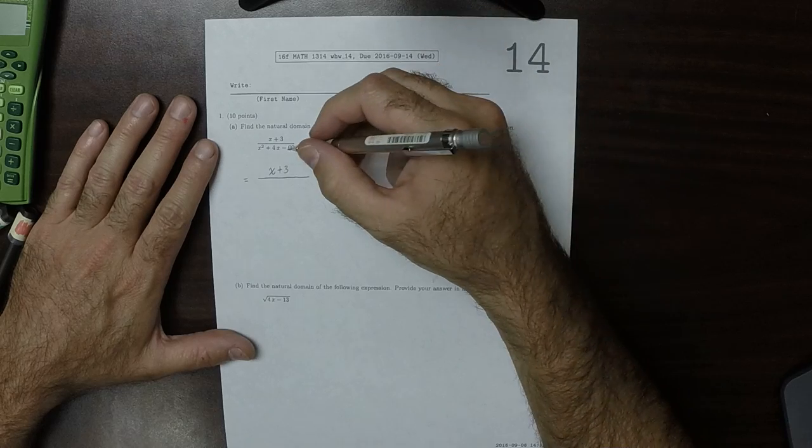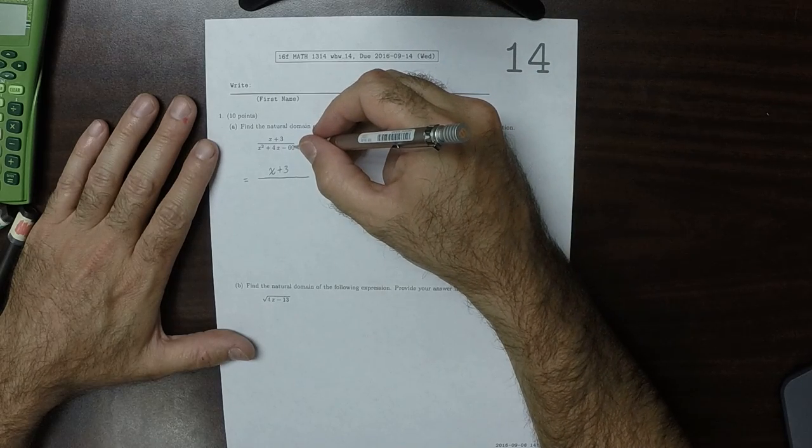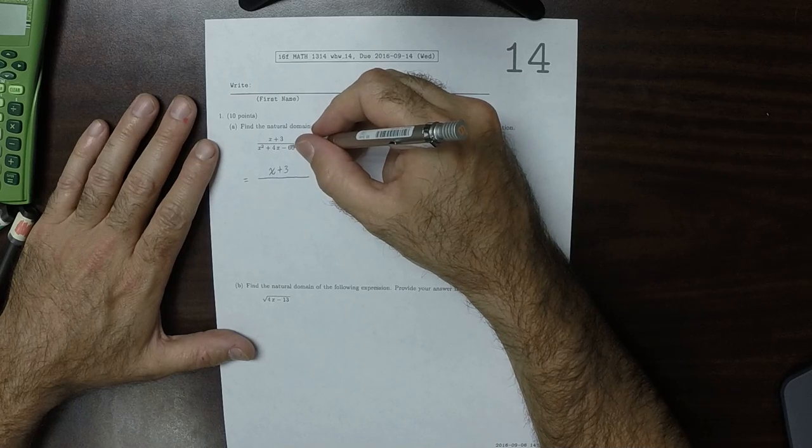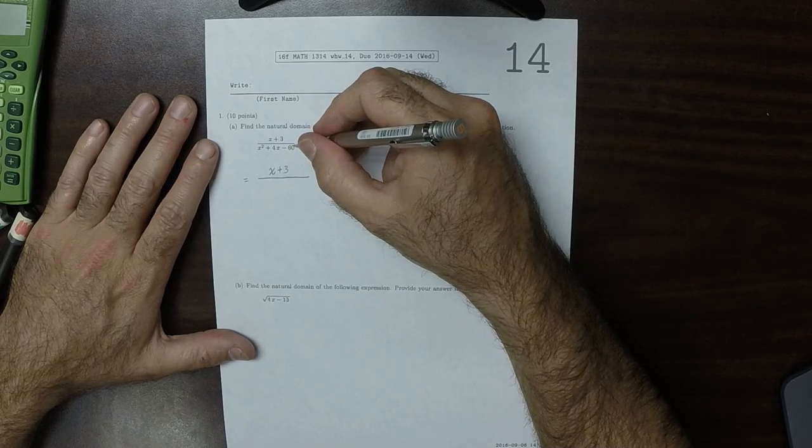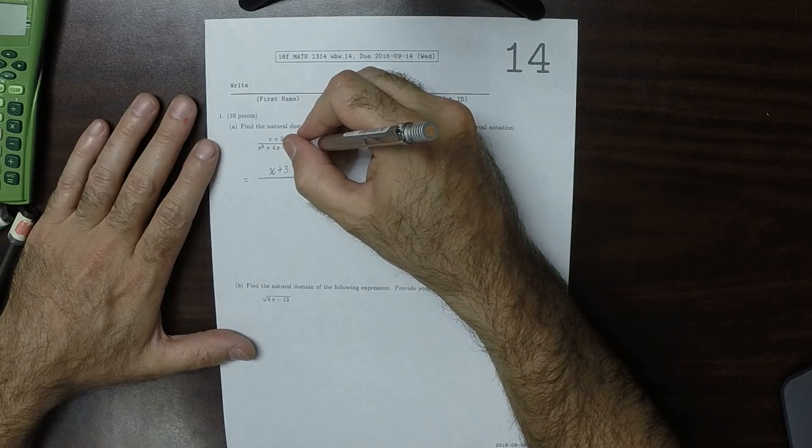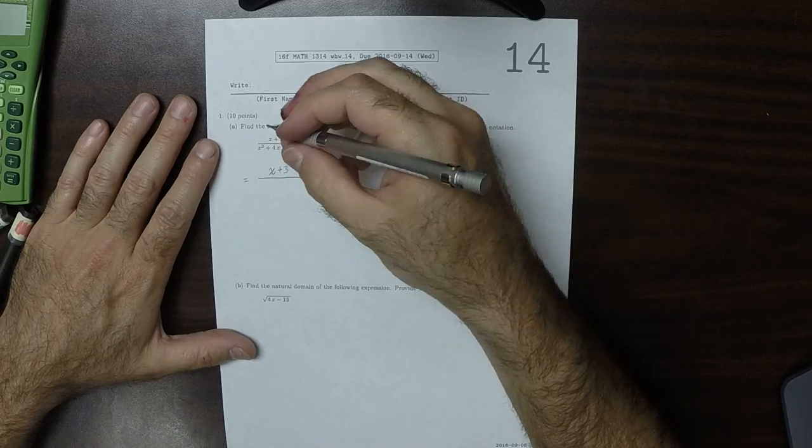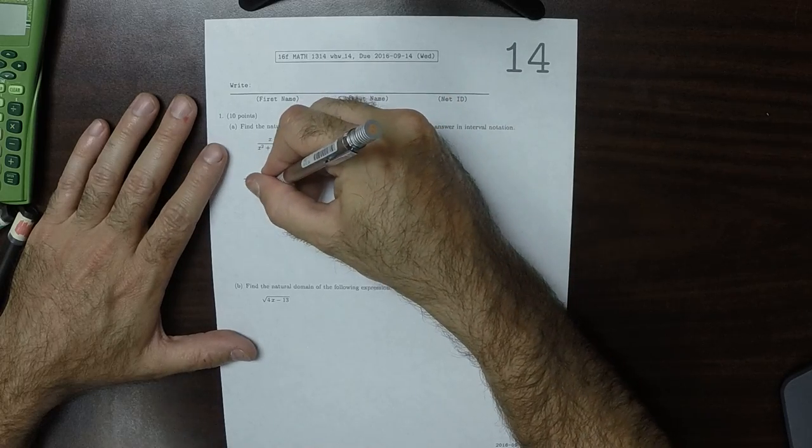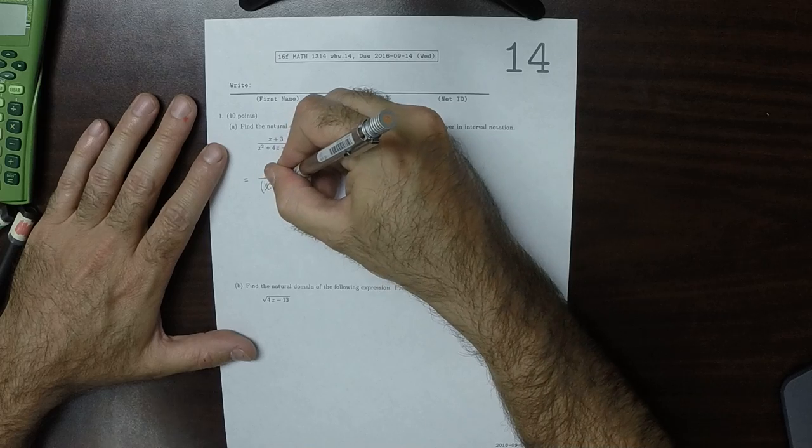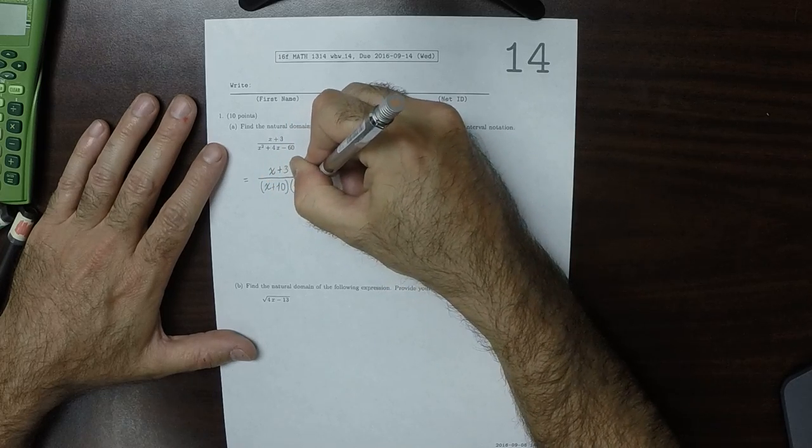Well, let's think about that. 1 and 60? No. 2 and 30? No. 3 and 20? No. 4 and 15? No. 5 and 12? No. 6 and 10? Ah, yes, here we go. So it'll be x plus 10 and x minus 6.